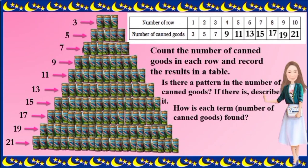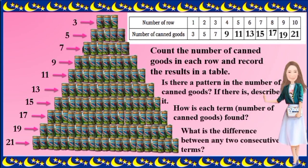How is each term or the number of canned goods found? Correct. The number of canned goods can be found by adding 2 to every row — 2 canned goods for every row: 3 plus 2 is 5, plus 2 is 7, plus 2 is 9, and so on. What is the difference between any 2 consecutive terms? The difference is 2 and they are all equal, so the difference between any 2 consecutive terms is equal.